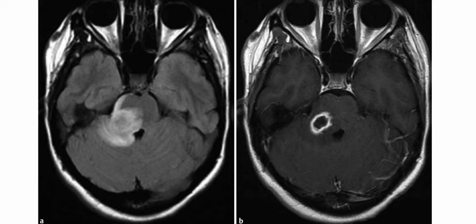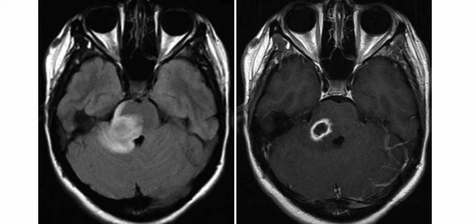Next case: a teenage girl presenting with ataxia and headaches. On the FLAIR sequence, there is diffuse abnormal increased signal intensity within the pons on the right side, extending into the middle cerebellar peduncle and right cerebellar hemisphere. On the post-contrast sequence, there is ring enhancement centrally with surrounding hypointensity.